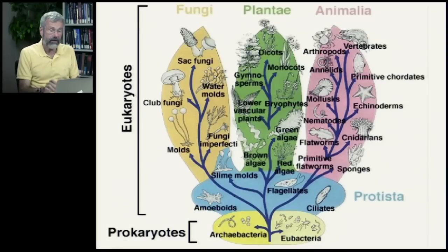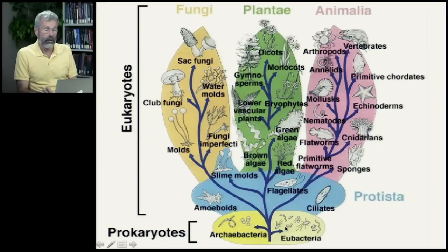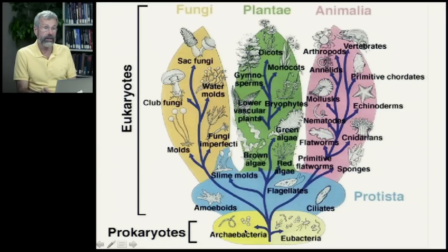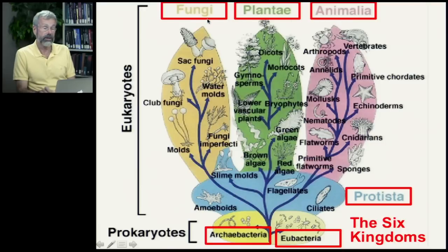We now have a classificatory system that modern evolutionary biologists can use to look at the relationships between all living things. At the base, because these would be the first living things on Earth, are what are called prokaryotes — the two different kinds of bacteria, the Archaea and the Eubacteria, neither of which have nucleated cells. Then we have the protists, from which gave rise the multicellular plants, fungi, and animals. Traditionally until recently, the classification used plants, animals, fungi as multicellular kingdoms, protists as the fourth, and the two kinds of bacteria as fifth and sixth — a six-kingdom classificatory system.